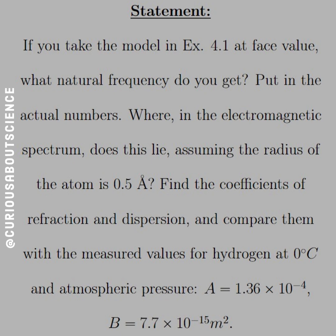What we need to do is if you take a look at the model, example 4.1 at face value, what natural frequency do you get? Put in the actual numbers where in the electromagnetic spectrum does this lie. Assuming the radius of the atom is 0.5 angstroms, find the coefficients for refraction and dispersion and compare them with the measured value of hydrogen at 0 degrees Celsius and atmospheric pressure, A equals 1.3 times 10 to the negative 4, B is equal to 7.7 times 10 to the negative 15 meters squared.